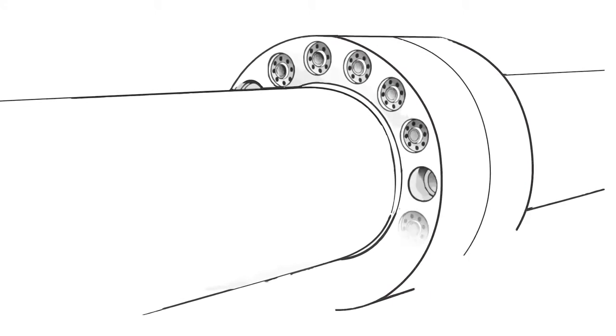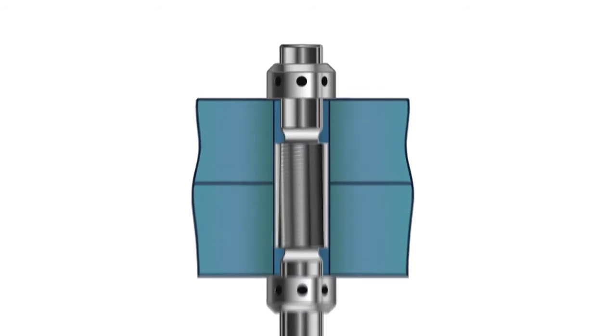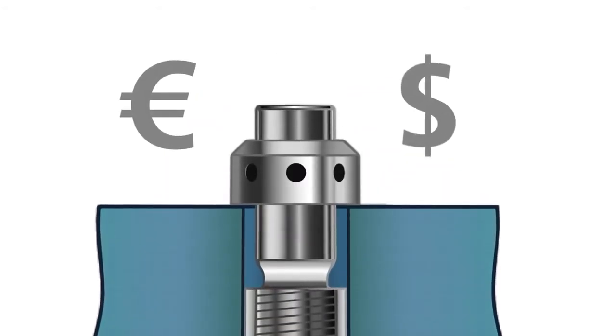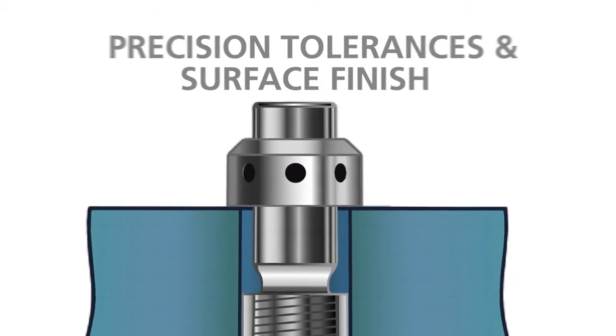Flange couplings are often used to transmit large torques and require tight or interference fit bolting elements, which are expensive to manufacture and place high demands on the tolerances and surface finish of the bores.